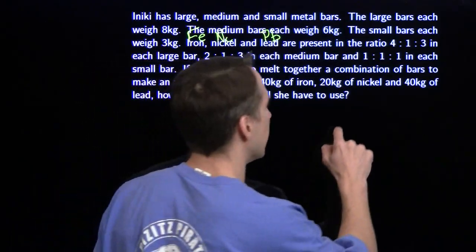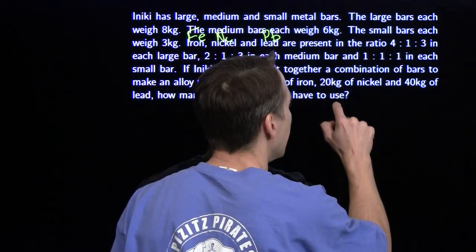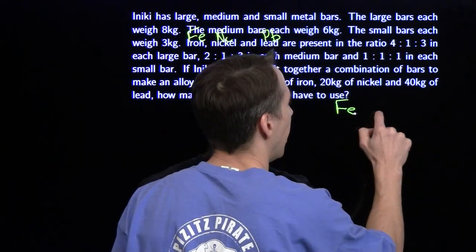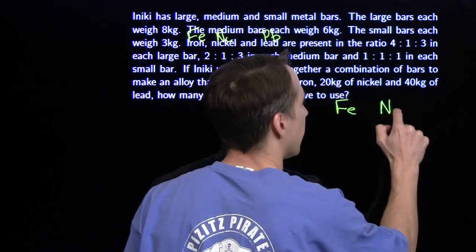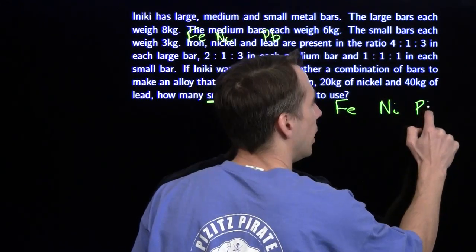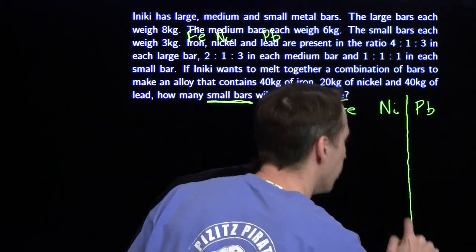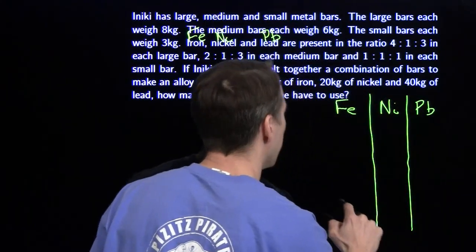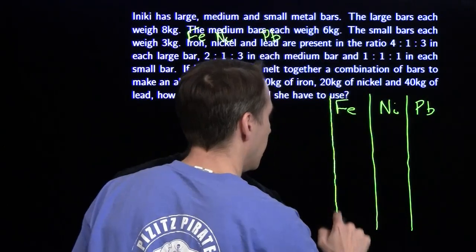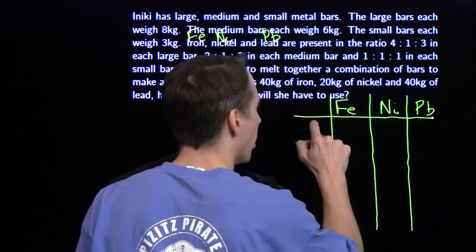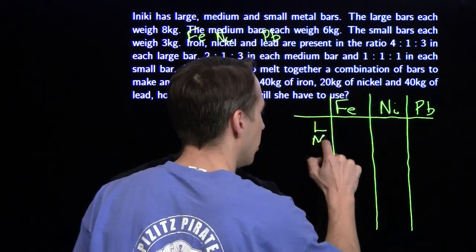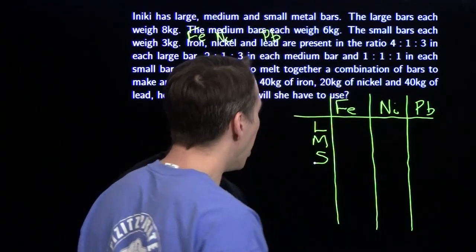That's a lot of information here. We're going to use a table again to keep it organized. We've got our iron, nickel, and lead, and we're going to keep track of what's going on. We have three types of bars: large, medium, and small.